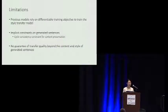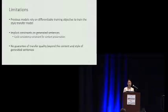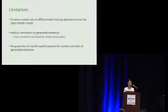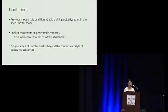Here are some limitations of existing works. Because they all rely on supervised learning, they must limit themselves to differentiable training losses, and therefore have to use implicit constraints on the generated sentences. Also, most works focus mainly on content preservation and transfer strength, and do not care much about the fluency of generated sentences. In our model, we want to put explicit constraints on the generated sentences to ensure they meet our requirements in style, content, and fluency.